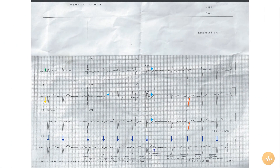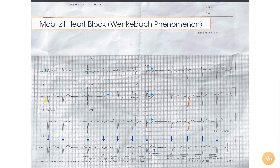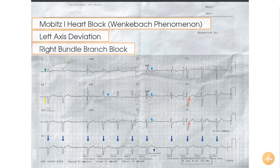In summary, this ECG shows a patient with collapses to be in second degree heart block of the Wenckebach phenomenon, or Mobitz Type I variety. They have left axis deviation and a right bundle branch block pattern.